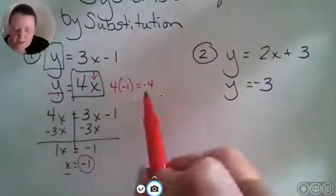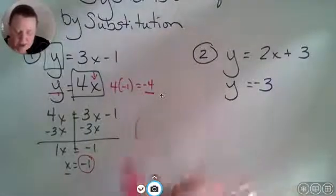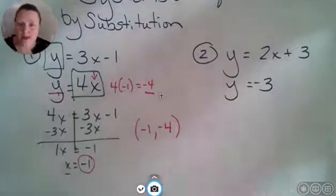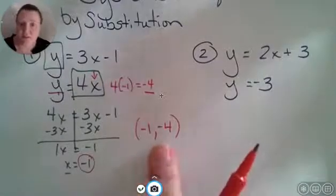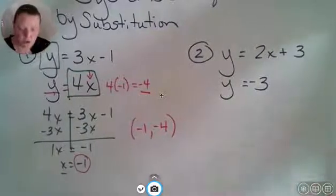That means y equals negative 4, and we're ready to write our solution. We have ordered pairs x comma y, and so this is my final solution. We're going to do the same thing on question number two.